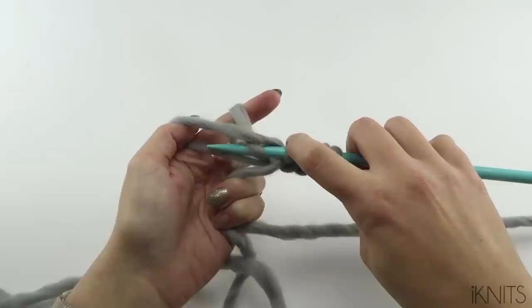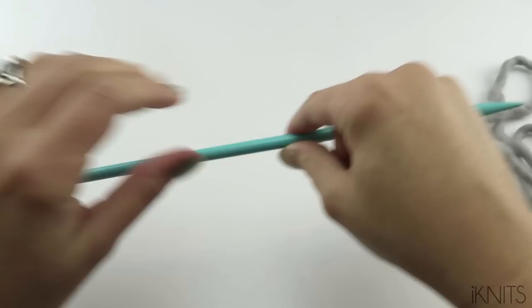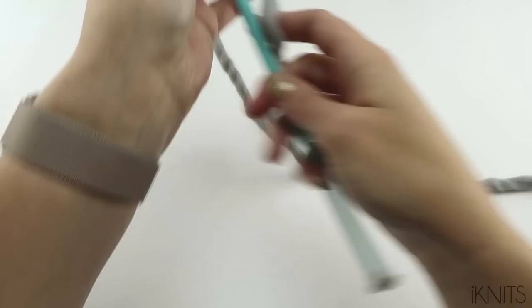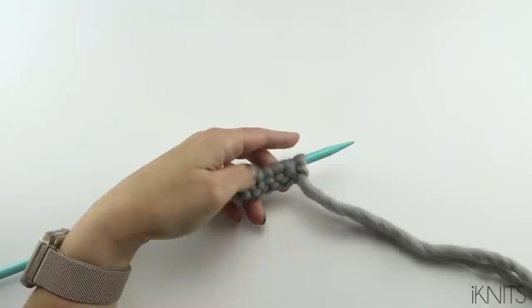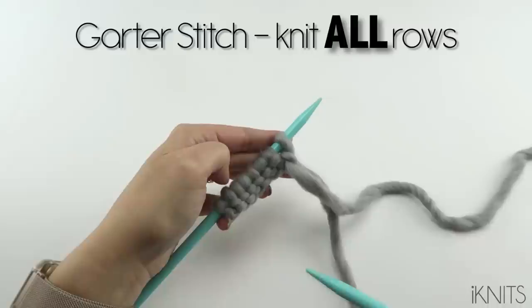Now let's say you're done casting on. You're going to turn your work over. And you see these bumps? This is the wrong side. And this is the right side. Anyway, so here's your wrong side. With your first project you'll probably do garter stitch. For garter stitch you just knit every single row. The right side row and the wrong side row. We're on the wrong side row.